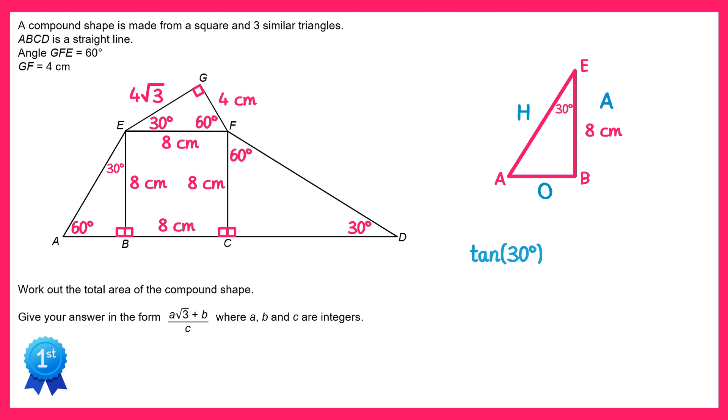So we can write down that tan of 30 equals the opposite which we don't know, divided by the adjacent which is 8. Tan 30 is the same as square root 3 over 3, so the opposite must be square root 3 over 3 multiplied by 8, which is 8 root 3 over 3. We can add this to our diagram.